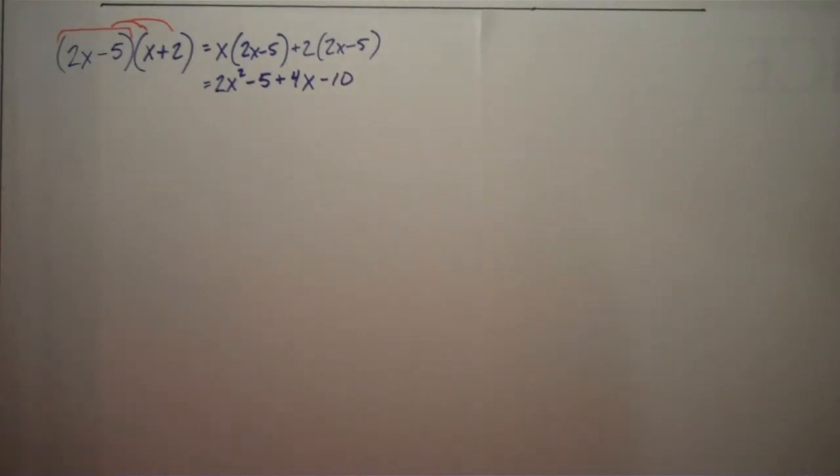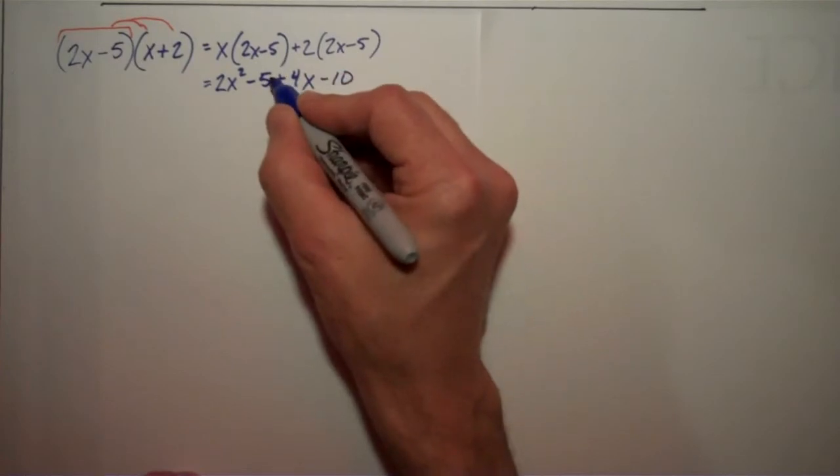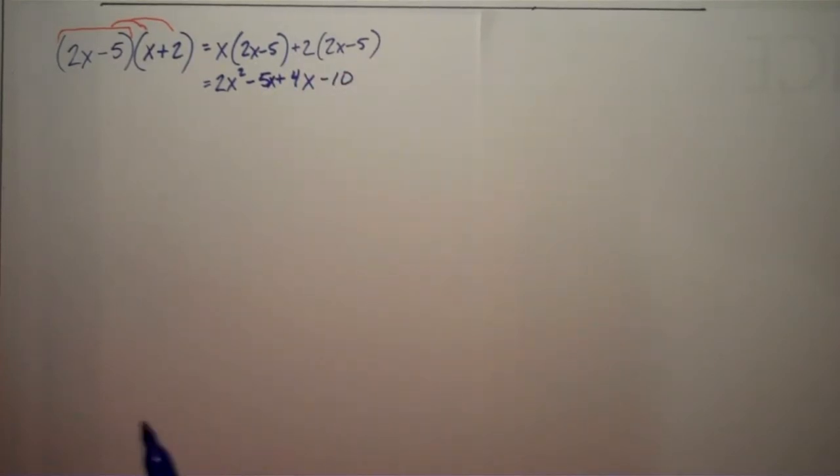And now all I... hey, hold it. x times negative 5 is minus 5x. Sorry about that. Now that looks a little better.